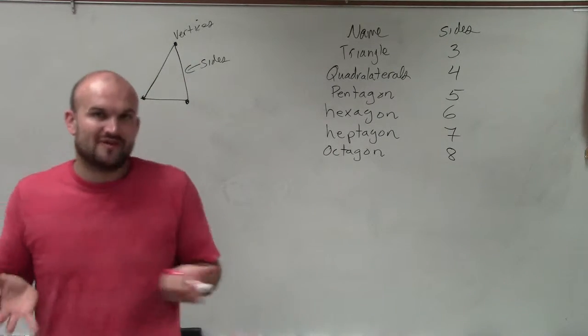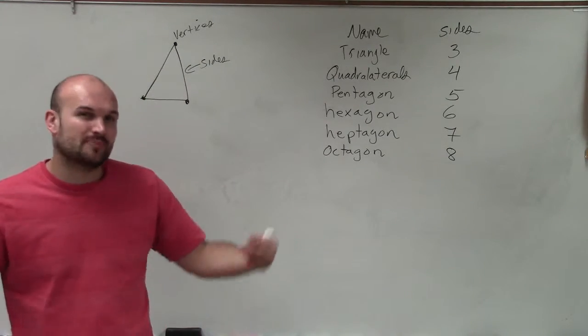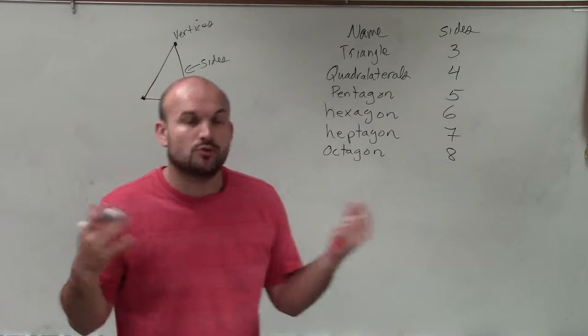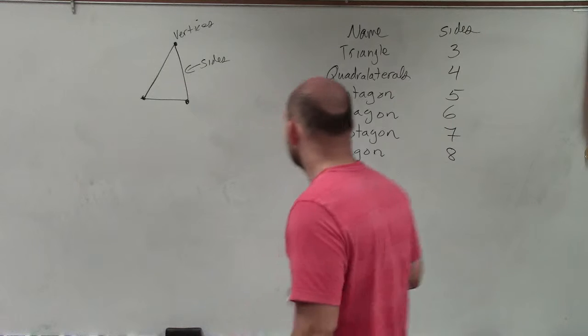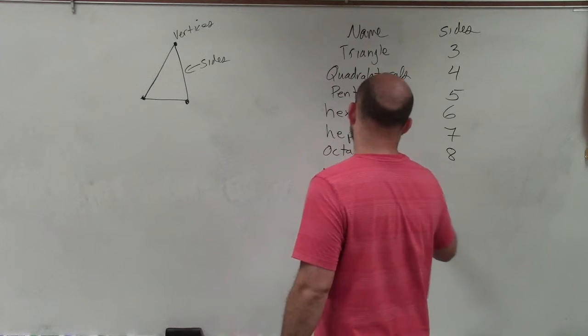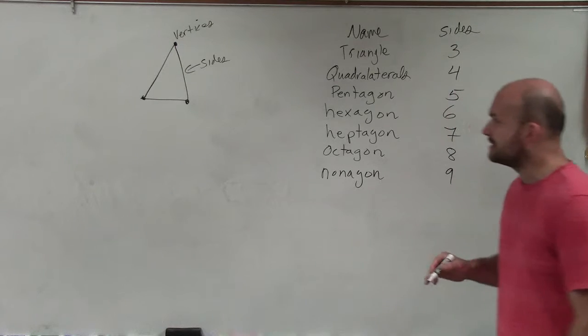So those are the most famous ones that we're going to be using most often. However, we do like to go up to 12 sides as far as with our names. So the next one would be a nonagon. That is when a polygon has nine sides.